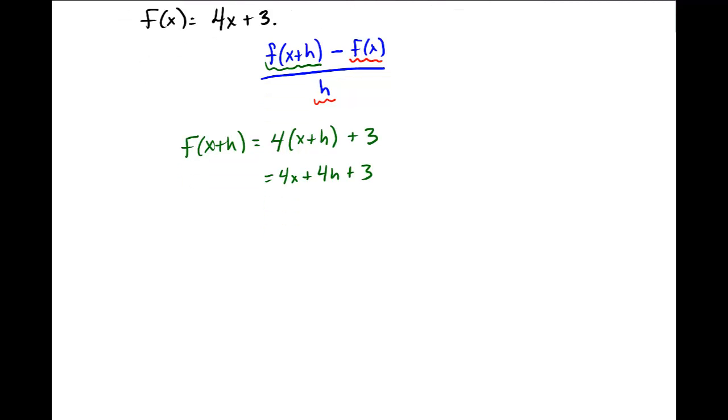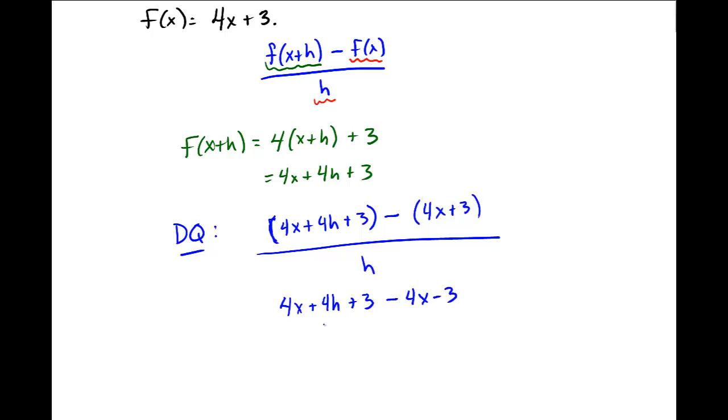So now back to the difference quotient, which I will call DQ. And I'll always think of Dairy Queen when I'm saying that. But in this context, difference quotient. So I want to put in f(x + h). So for f(x + h), I put in what I just found, 4x plus 4h plus 3 in parentheses, minus f(x) in parentheses, 4x plus 3, all divided by h. Open up your parentheses, distribute this minus, and simplify. 4x plus 4h plus 3 minus 4x minus 3 divided by h.